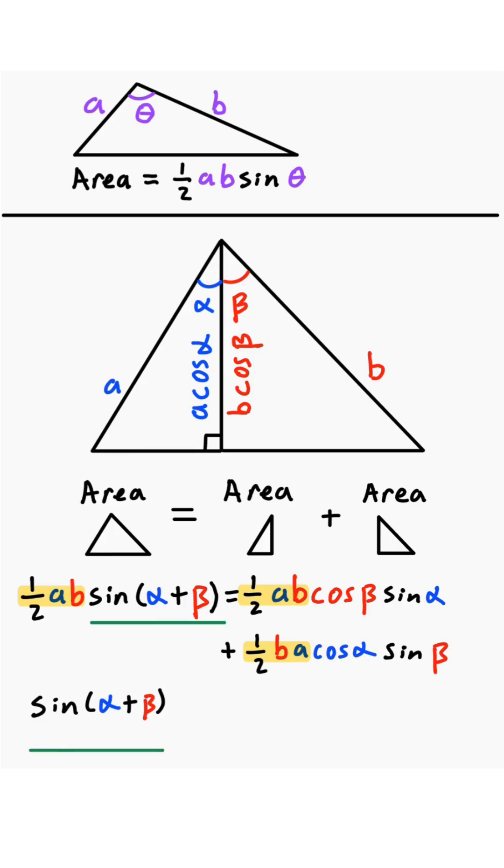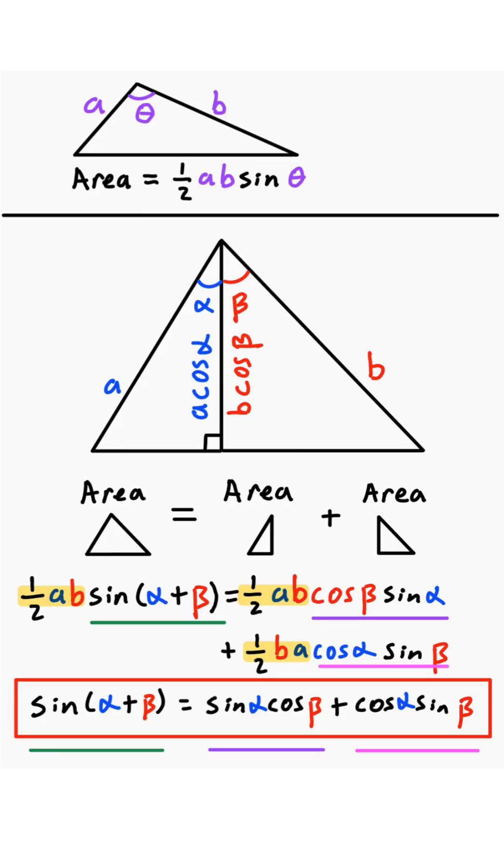So from this, we're left with sine of alpha plus beta is equal to cosine of beta times sine of alpha, which can be written as sine of alpha cosine of beta, plus cosine of alpha sine of beta. Let's change some colors. And now we have the sine sum formula.